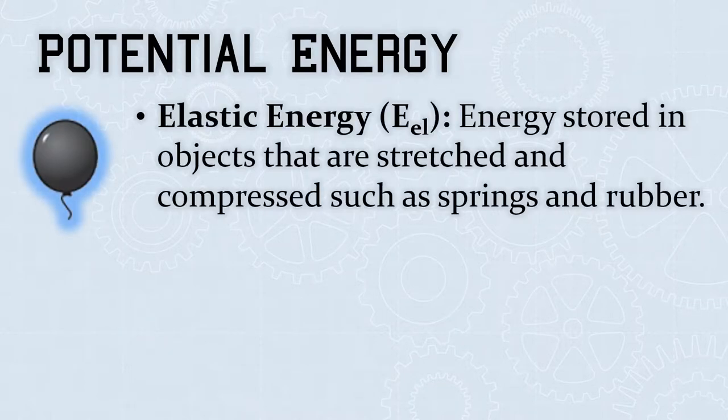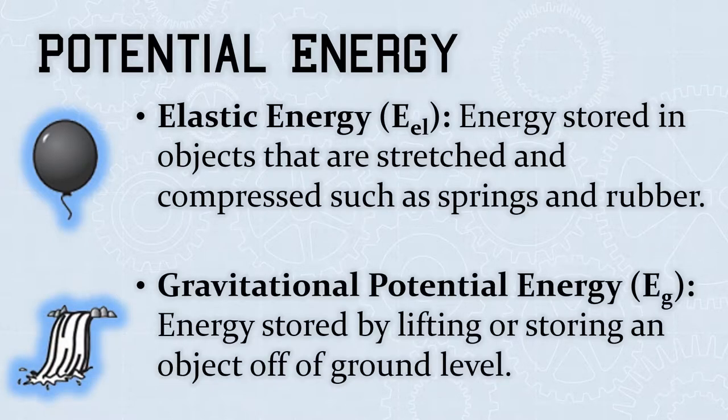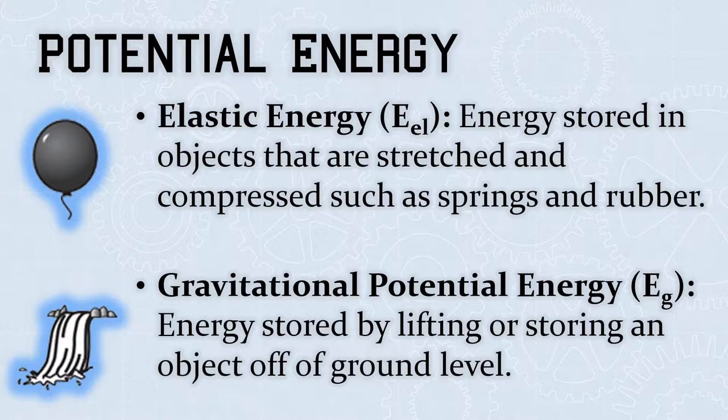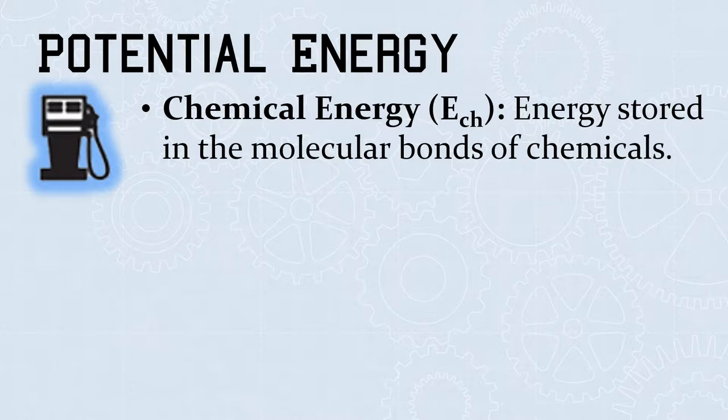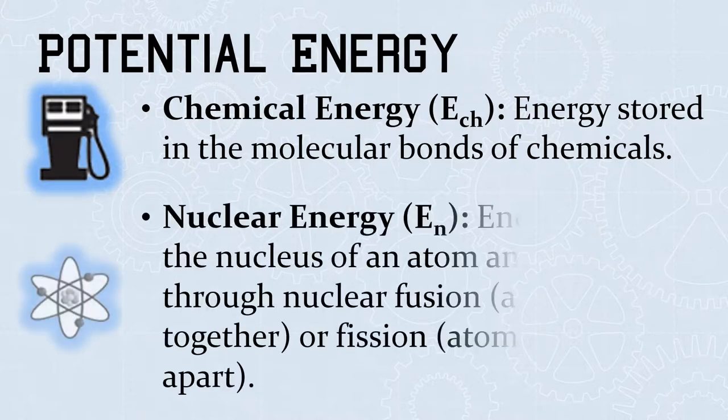Elastic energy is energy stored in objects that are stretched and compressed, such as springs and rubber. Gravitational potential energy is energy stored by lifting or storing an object off of ground level. Chemical energy is energy stored in the molecular bonds of chemicals. Nuclear energy is energy stored in the nucleus of an atom and released through nuclear fusion, which is atoms coming together, or nuclear fission, which is atoms breaking apart.